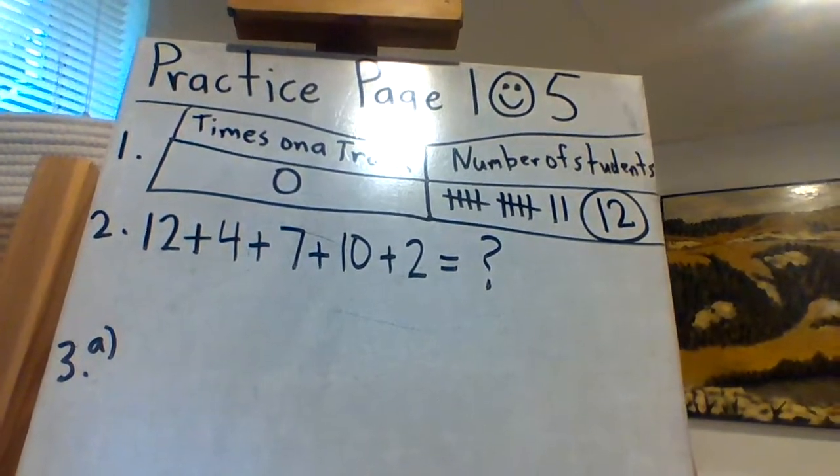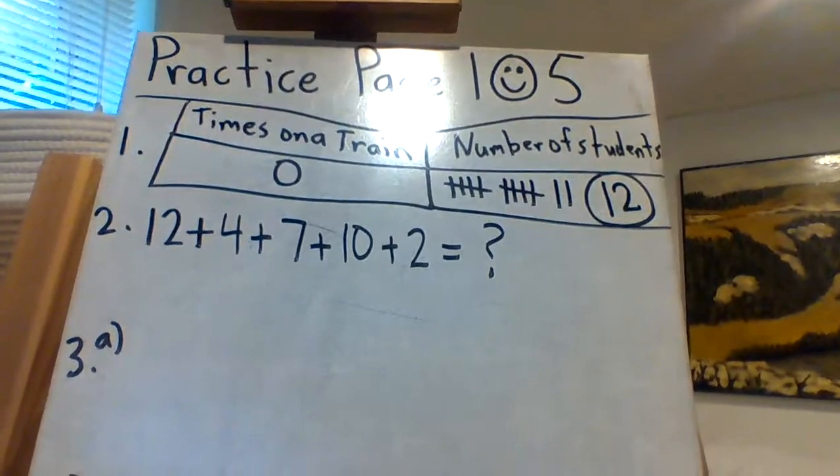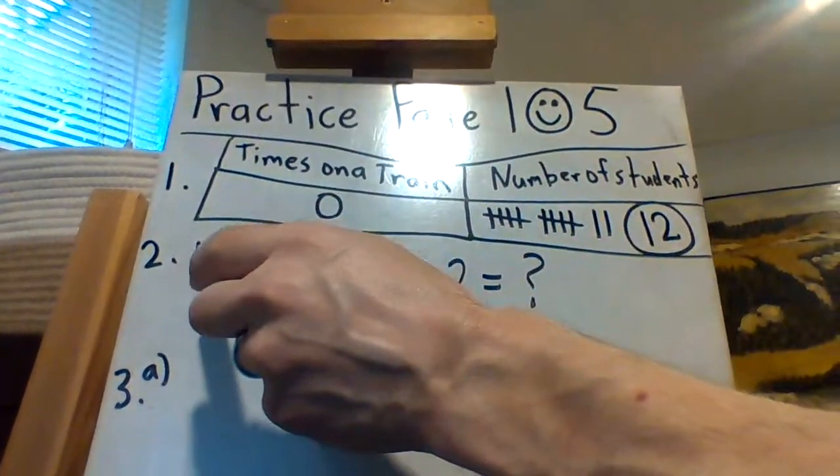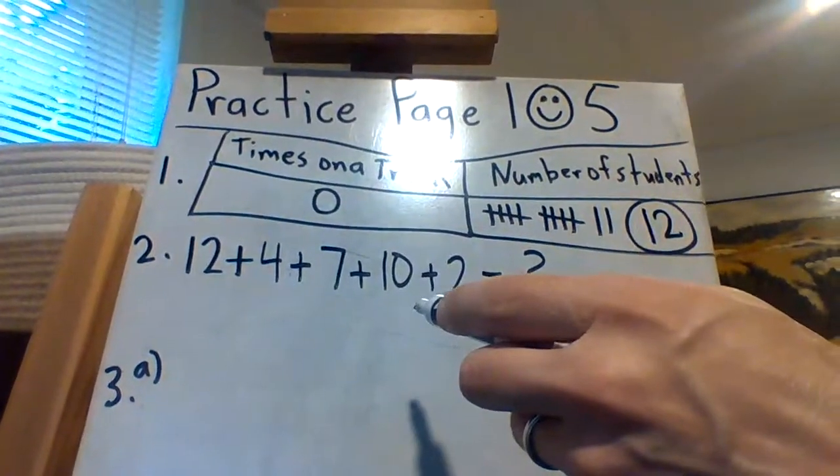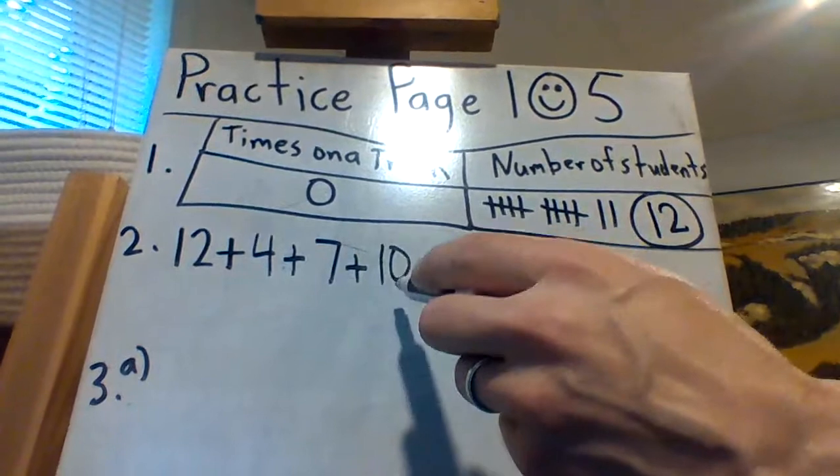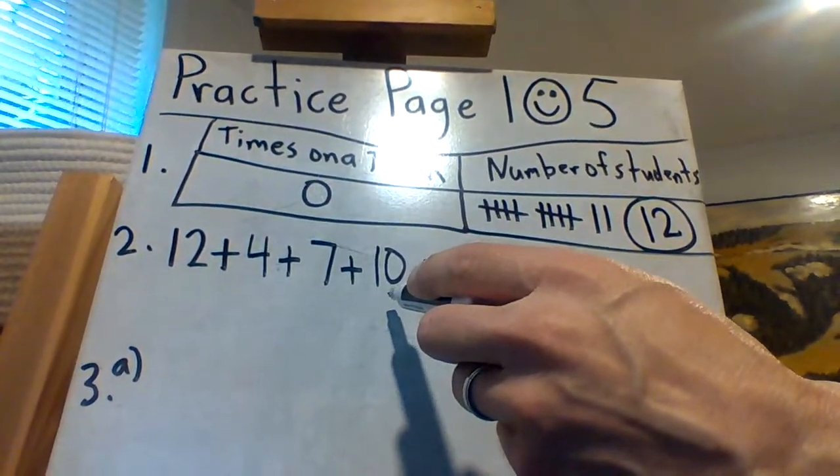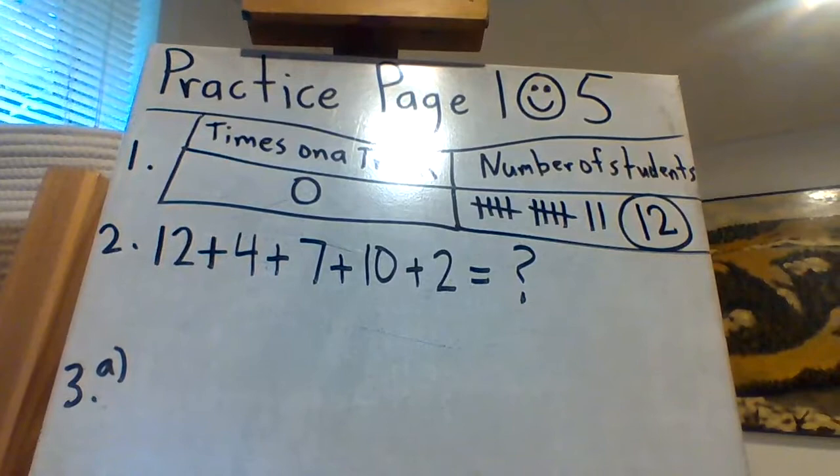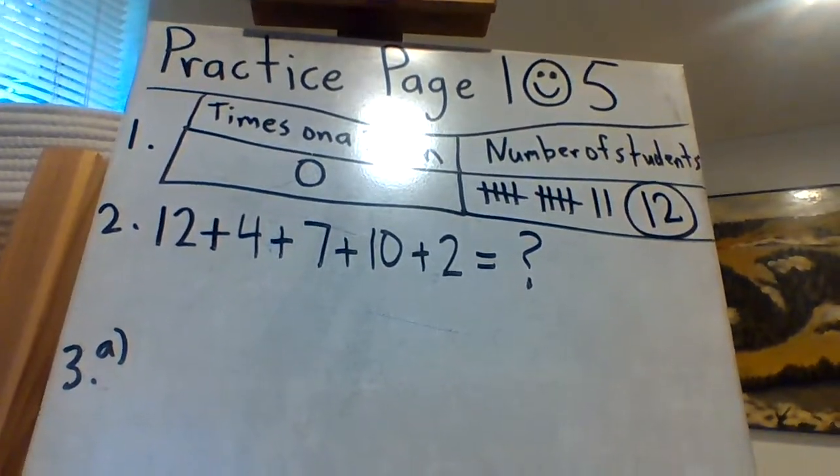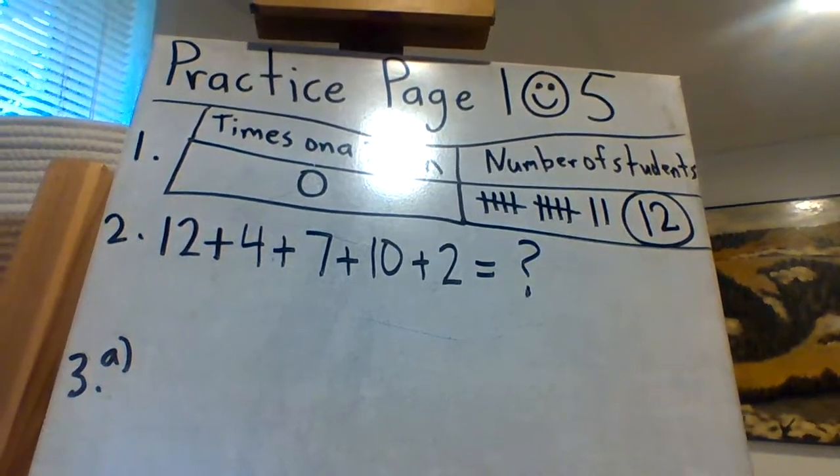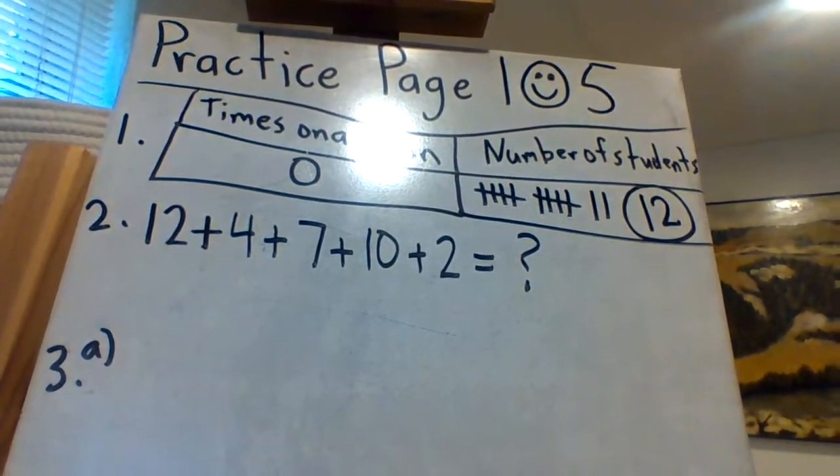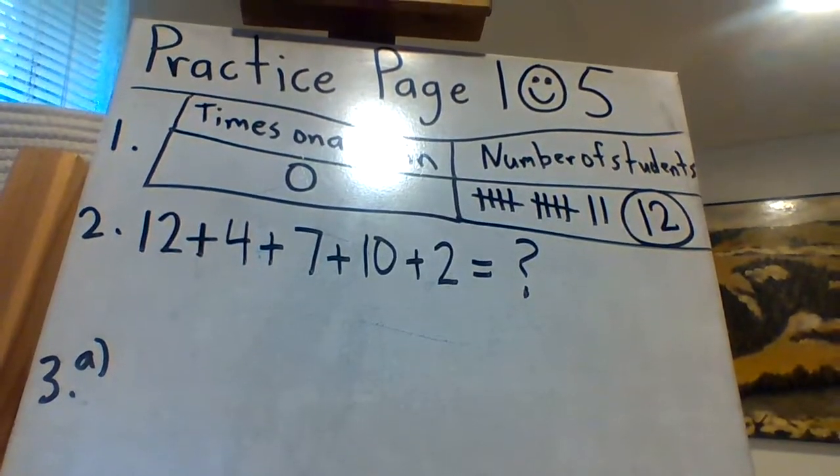Number two. How many children were asked the question? Well, quite a few. Twelve that said zero, and four that said one, and seven that said two, and ten that said three, and two that said more than three times. Okay, now I'm going to let you add that up because you're in grade three, you can handle it, and that will give you the answer. Count them all up, add them all up.